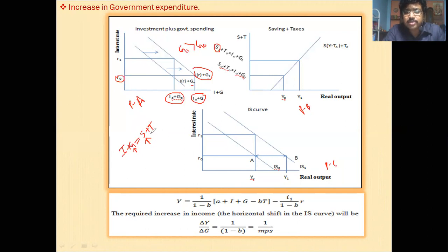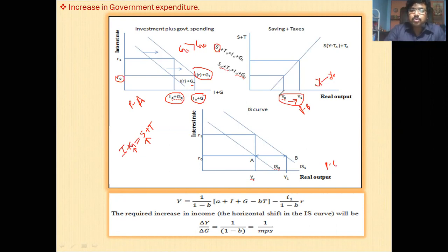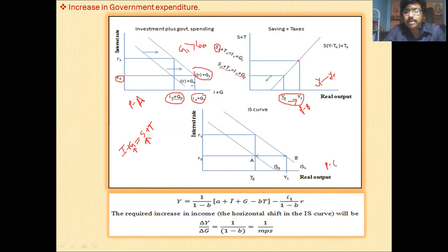This increase in saving will increase income. The interest rate remains unchanged. This change — that is Y1 minus Y0 — this much is because of the increase in saving. So here we get the difference: Y0 represents S0+T0 equal to I0+G0, and this point represents Y1 income and S1+T0 equal to I0+G1. Savings increase, and as a result, income increases.